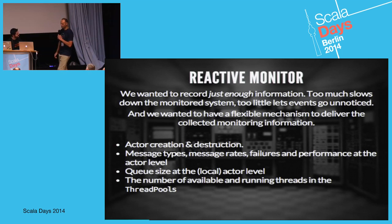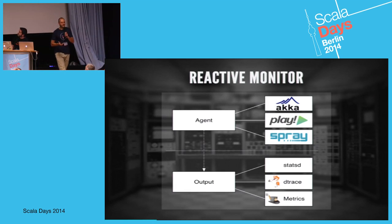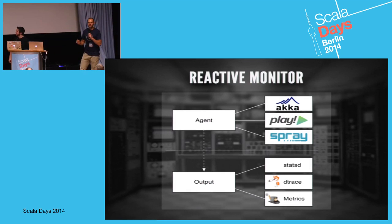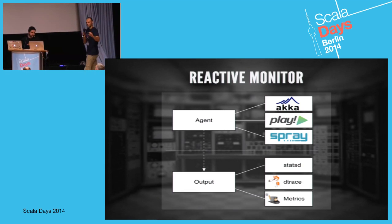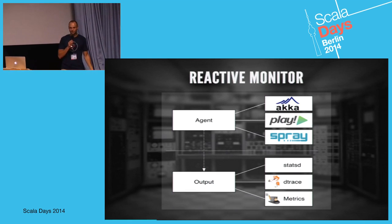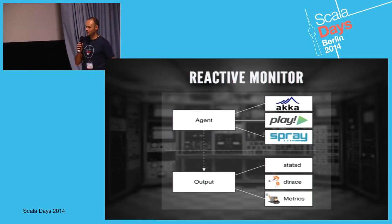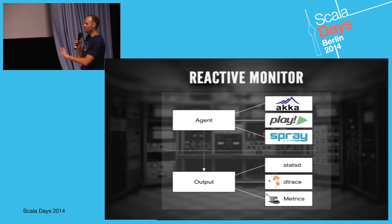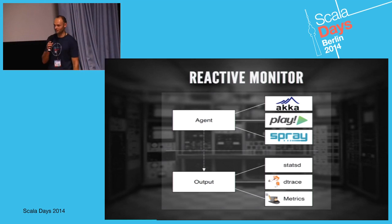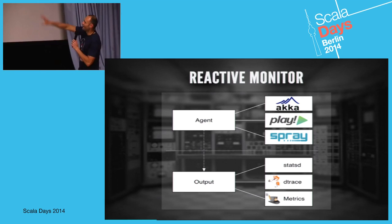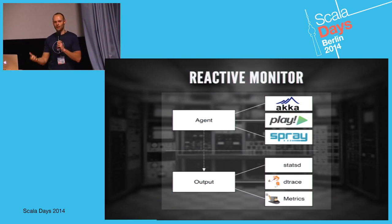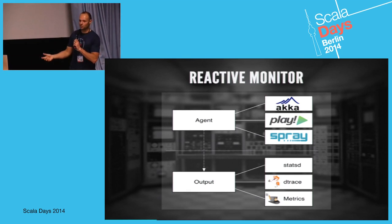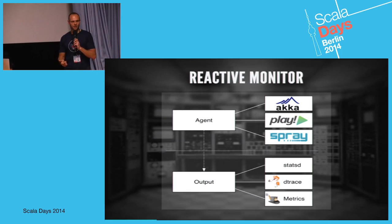We divided Reactive Monitor into two big components: agents that collect the metric data, and outputs that send the data to StatsD, DTrace, and Codahale Metrics. The agents can instrument Akka - actor creation, destruction, messages - Play to handle HTTP requests including errors and response times, and Spray which is the same: request counts, total request/response time, and throughput in bytes per second.